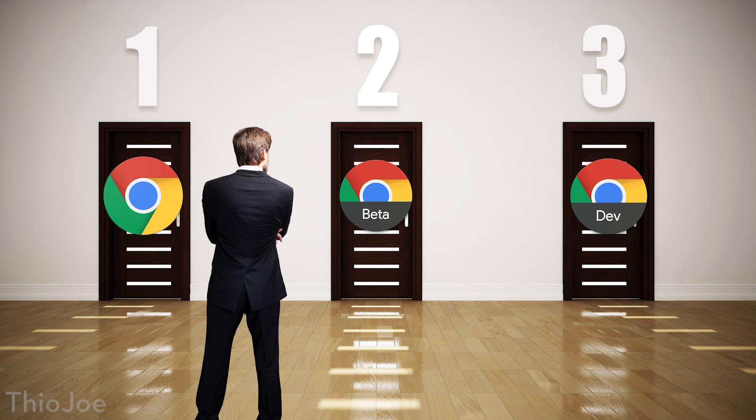You can only choose one of the first three channels — stable, beta, or developer — at a time, and whichever one you choose will install over the previous one. So if you're on stable and you install beta, the stable version will be uninstalled. Your settings should carry over between versions, but if you're going from the developer version back to stable, there might be some issues with settings not carrying over, so just be aware of that.